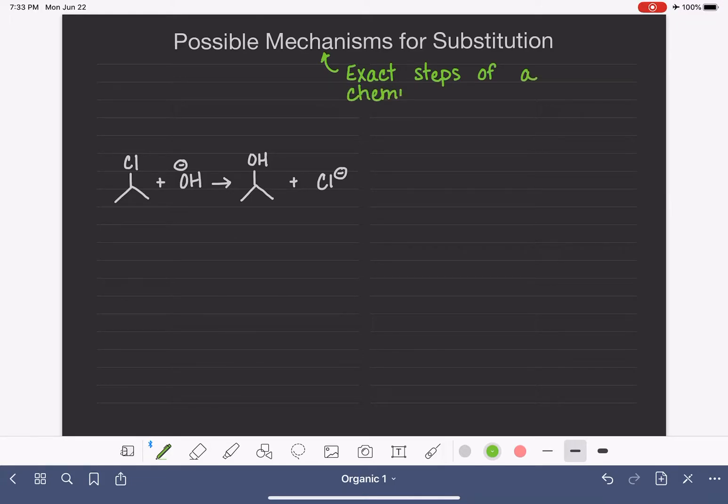In general chemistry, we really focused on balancing an overall equation. What are the reactants and what are the products and what does the reaction make overall? But in organic chemistry, we're going to expand that. We still care about what the reactants are and what the products are, but we also care about exactly how do the reactants convert into products. What are the steps that take place?